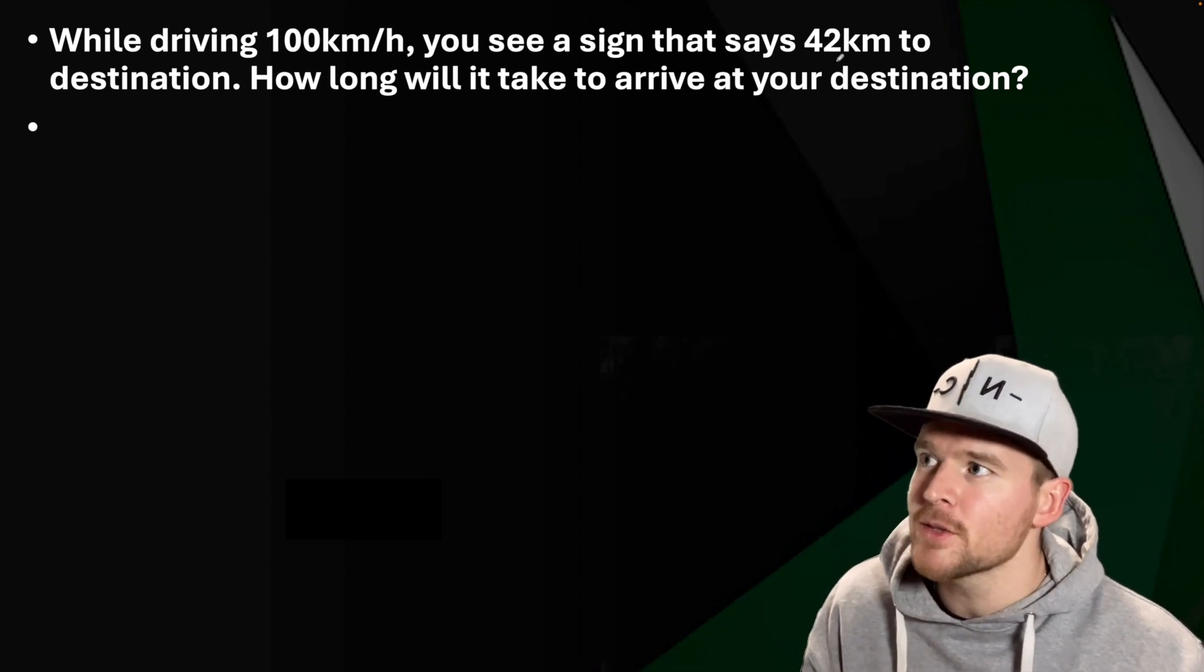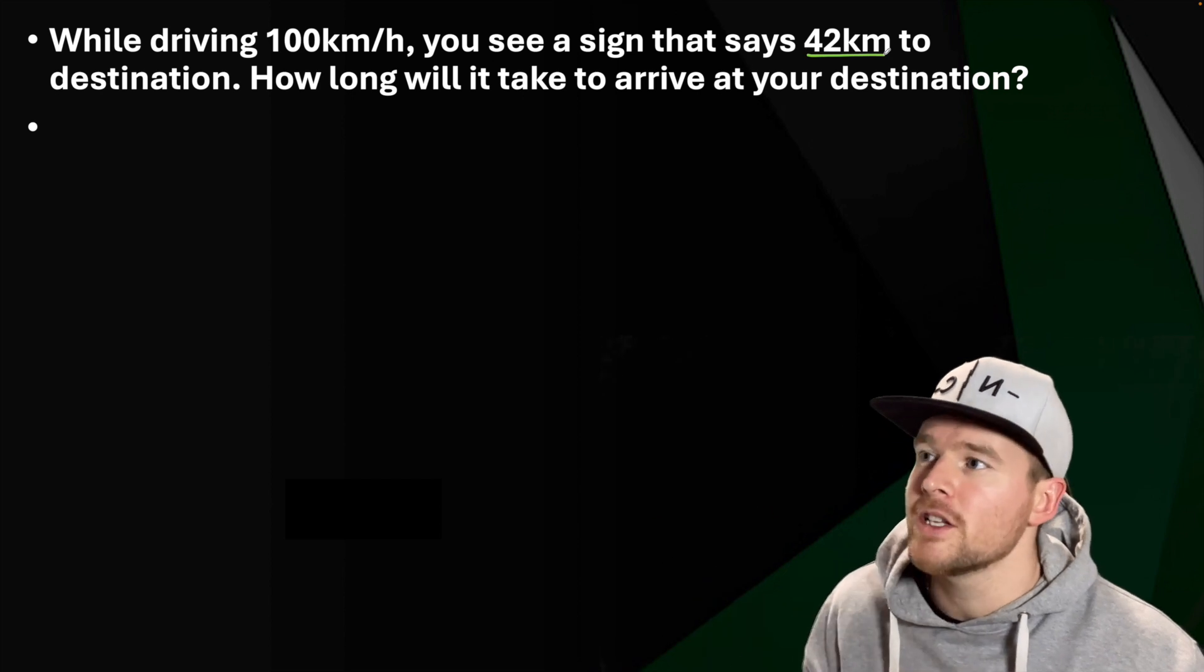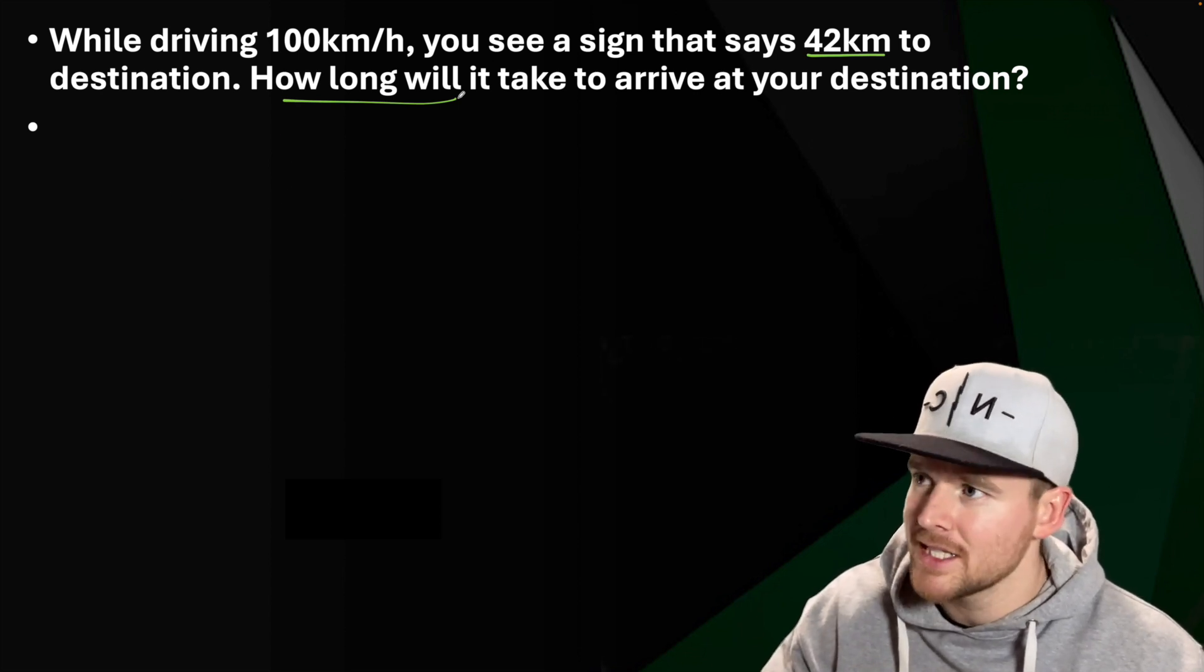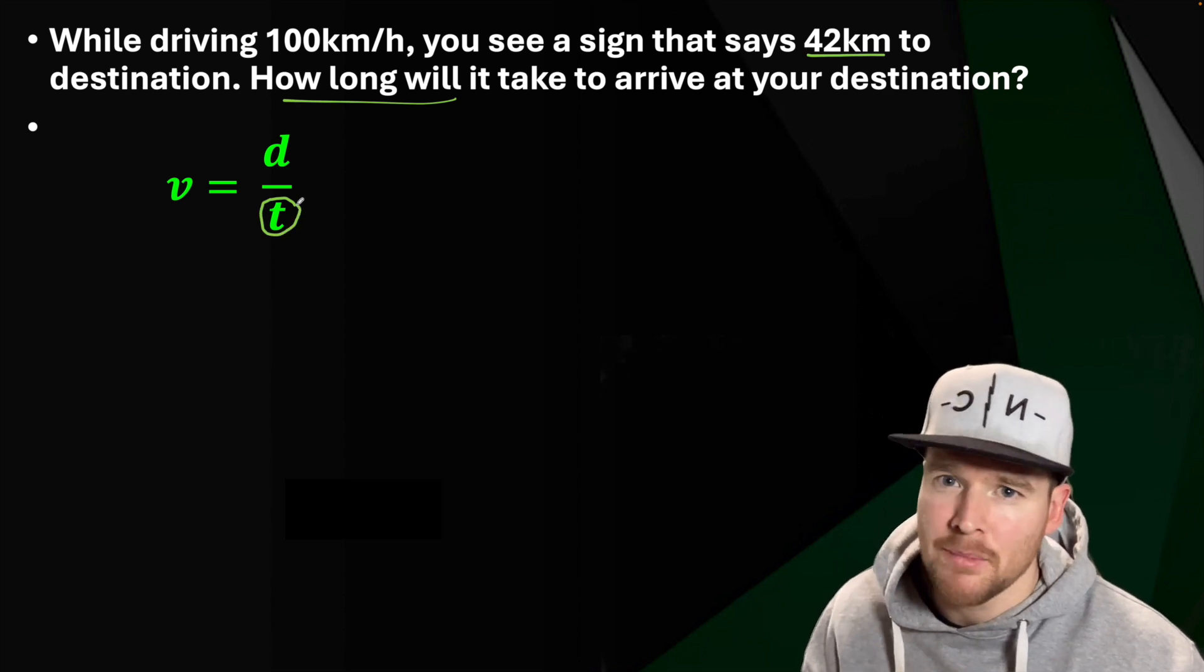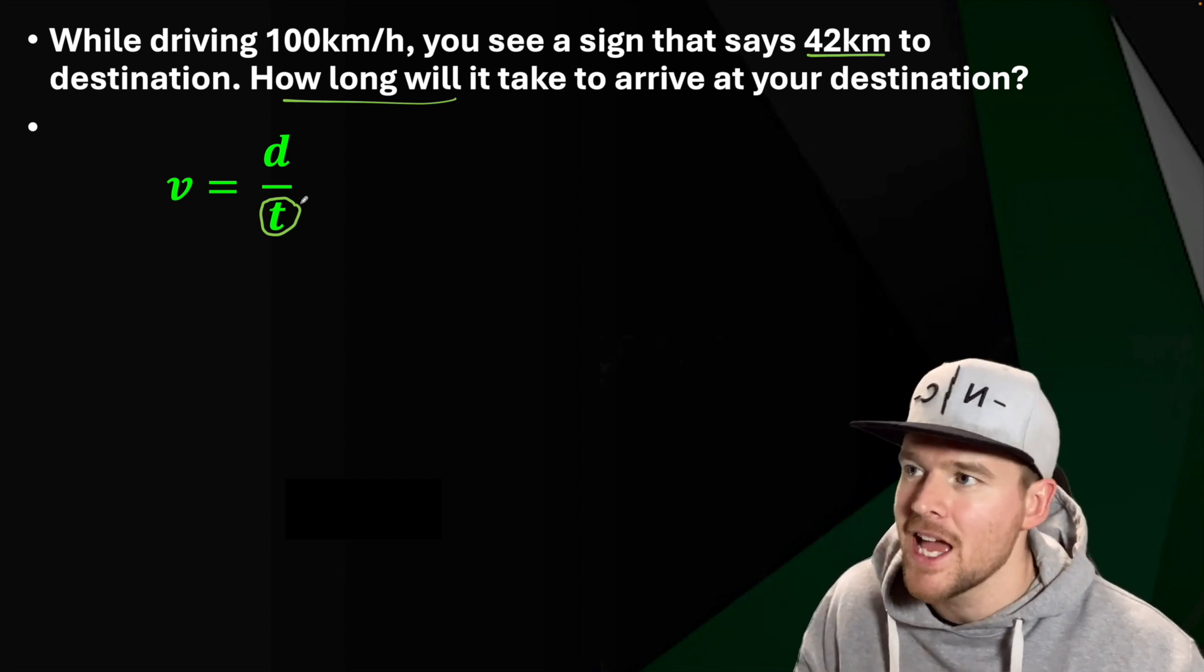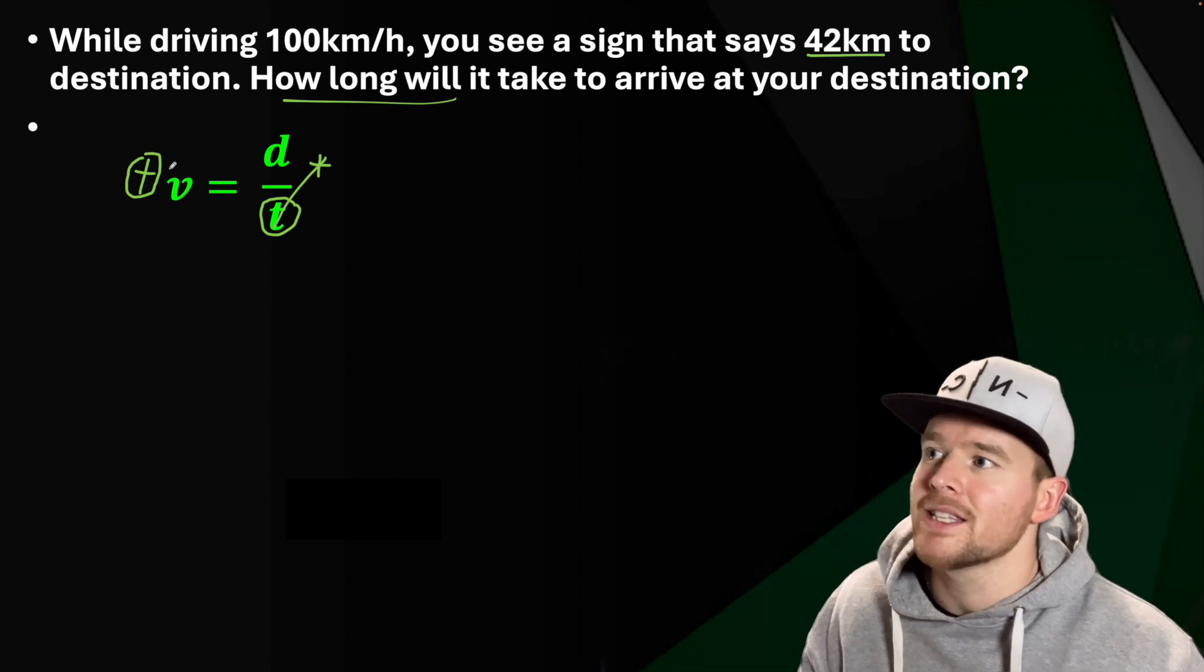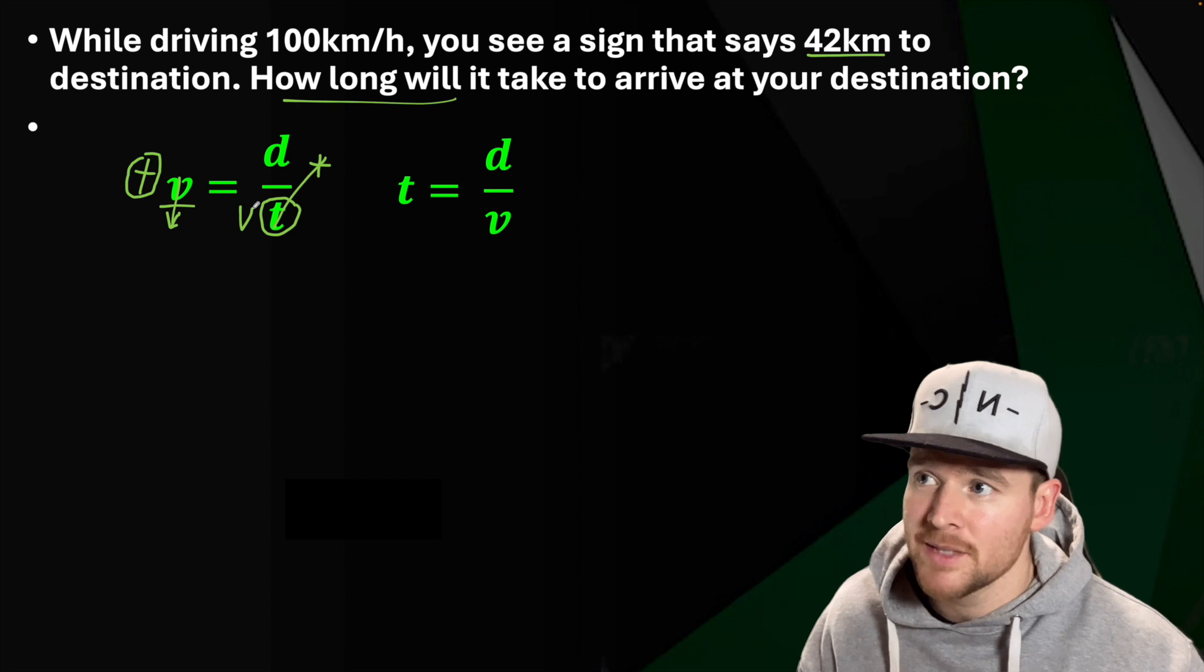Let's take a look at solving for a different variable. This one says while driving at 100 kilometers per hour, you see a sign that says 42 kilometers. How long will it take to arrive at your destination? So if we're saying this is uniform motion constant velocity, we'll use v is equal to d over t. We have to solve for t and we notice that t is in the bottom. Whenever what you're rearranging for is in the bottom, my advice would be to get it out of the bottom. So let's multiply by time. We have t times v is equal to d. Now divide by v. We have our new equation of time is our displacement divided by our velocity.